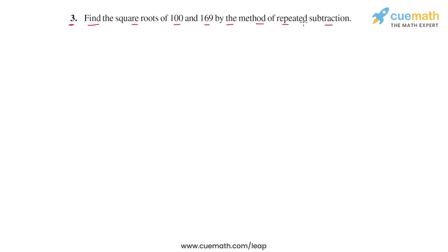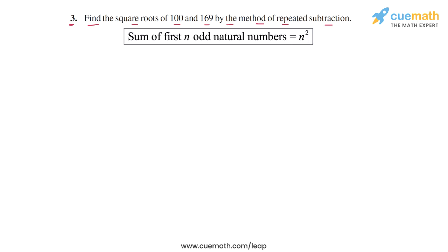What is this method of repeated subtraction? This method is based on the fact that the sum of the first n odd natural numbers is equal to n squared. So, if you use this fact in reverse, which means that if you keep subtracting successive odd natural numbers from a perfect square, you should end up at 0.